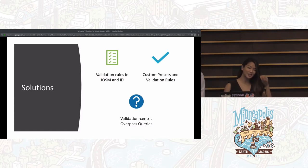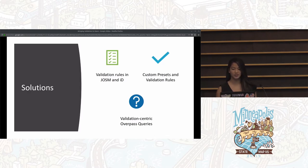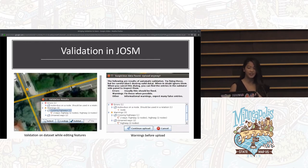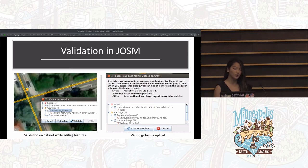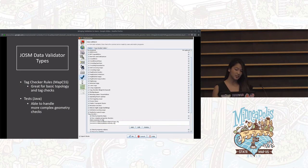In order to bring more validation to users in the editors, we have added to the validation rules in JOSM and iD, provided a way to create custom presets and validation rules, and created validation-centric overpass queries to pull in data that has issues. JOSM's data validator allows you to validate your current data set as you are editing and also warns you before you upload the data if there are any issues. There are two types of data validators in JOSM: tag checker rules written in MapCSS, which are great for basic topology and tag checks, and tests written in Java to handle more complex geometry checks.